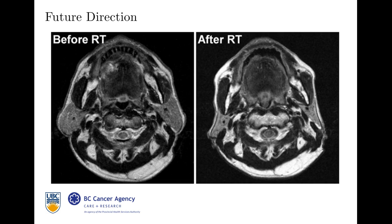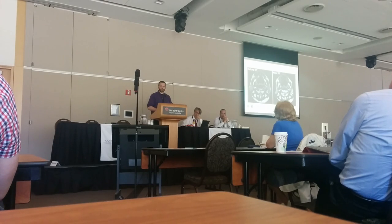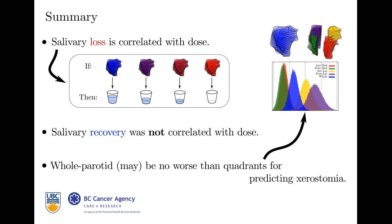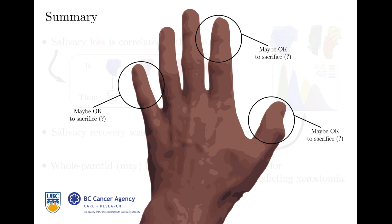Just to give you a demo — patient pre and post-RT, you can see a significant difference in the volume of the parotid. You would certainly expect this to have an effect on salivary output, and in fact we're not taking this into account yet, but really we should. To summarize: salivary loss is correlated with dose — super linear, very nice. Salivary recovery was not correlated with dose. Whole parotid may be no worse than quadrants for predicting xerostomia. But the key takeaway, with the hand analogy, is that there doesn't appear to be a thumb in the parotid.